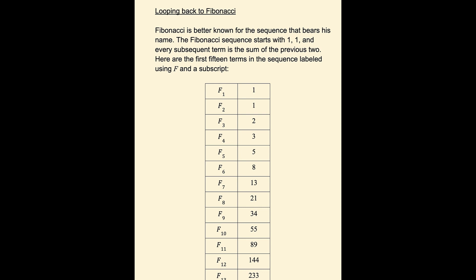Here are the first 15 terms in the sequence labeled using F and a subscript 1, 2, 3 to indicate the first, second, third, etc. So F1, F2 are just 1, 1, as I said above.